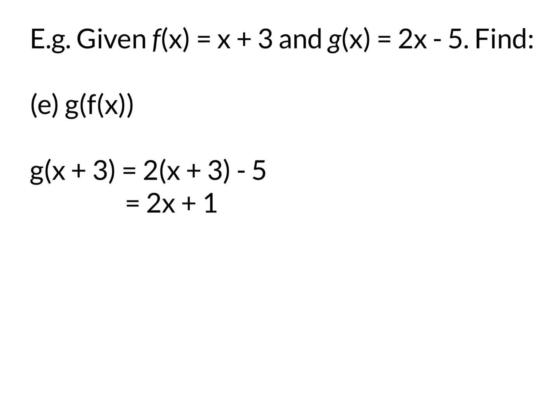Similarly, for g(f(x)), you replace the f(x) with x + 3, because that's its function. Then for the g function, wherever there's an x, you replace it with x + 3. So 2(x + 3) - 5, expand that bracket, you get 2x + 6 - 5, which is 2x + 1.